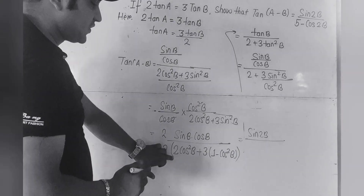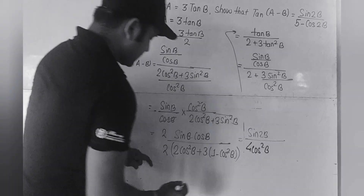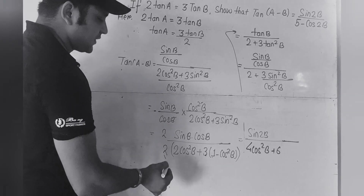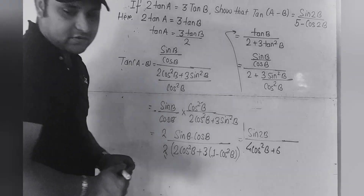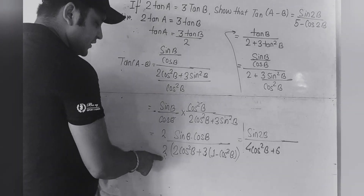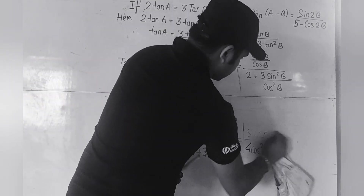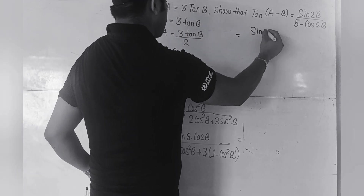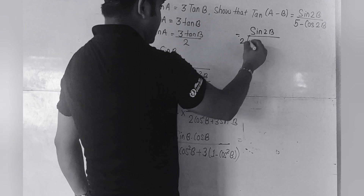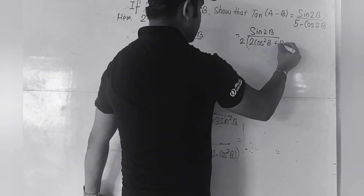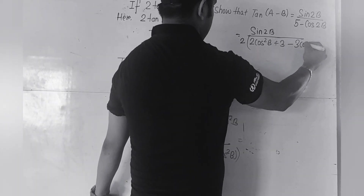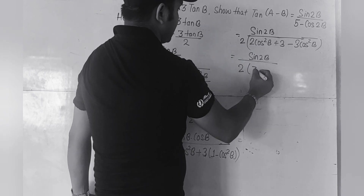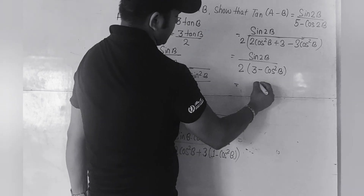Now let us solve the denominator. We have 2 × 2cos²B = 4cos²B, and 2 × 3 = 6. Substituting 1 - cos²B, we get: 2cos²B + 3(1 - cos²B). Simplifying: 2cos²B - 3cos²B = -cos²B. We have here 2cos²B minus 3cos²B gives -cos²B. And the formula 2cos²B = 1 + cos2B is applied.